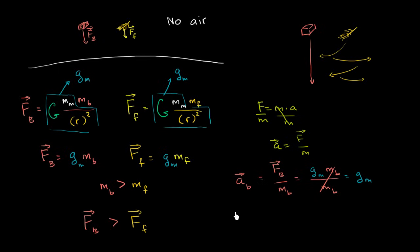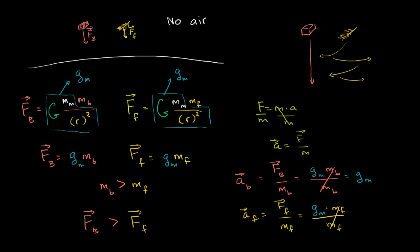Now let's do the same for the feather. The acceleration of the feather equals the force on the feather divided by the mass of the feather. The force on the feather is g sub m times the mass of the feather, divided by the mass of the feather — once again the mass cancels. Its acceleration is also g sub m. So they both accelerate at the same rate downward, which means they'll both hit the ground at the exact same time, despite one having a larger mass.